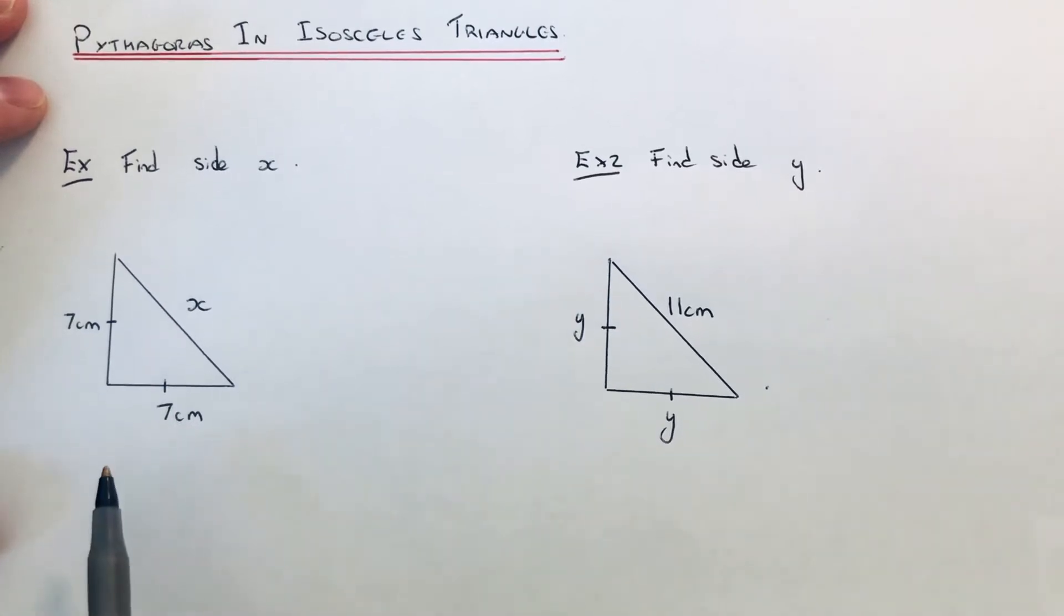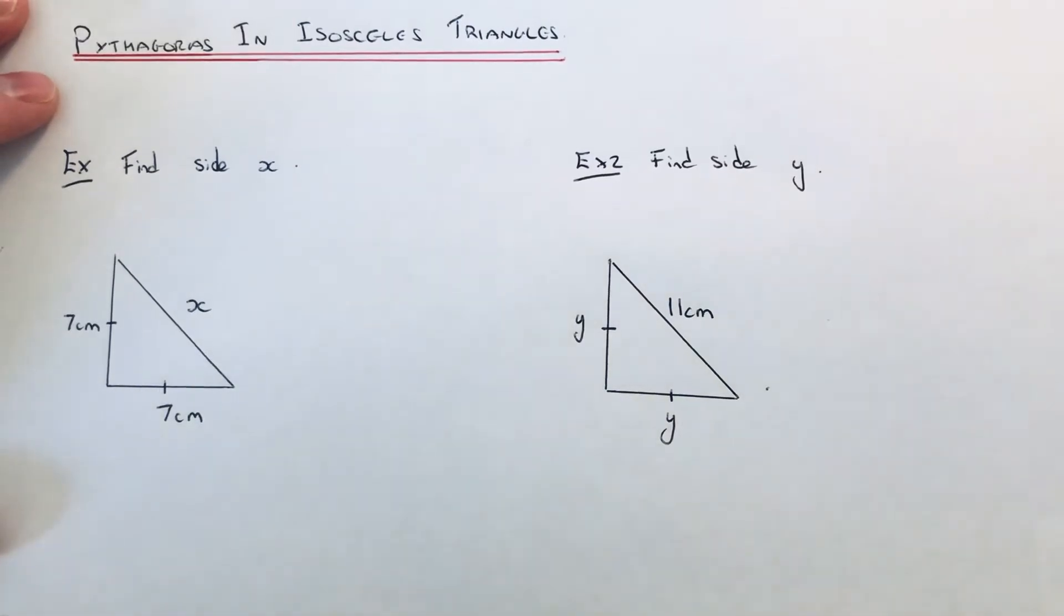Hi guys, welcome back. This is Maths 3000. I'm going to show you how to carry out Pythagoras in a right-angled isosceles triangle. An isosceles triangle is a triangle with two equal sides or two equal angles.